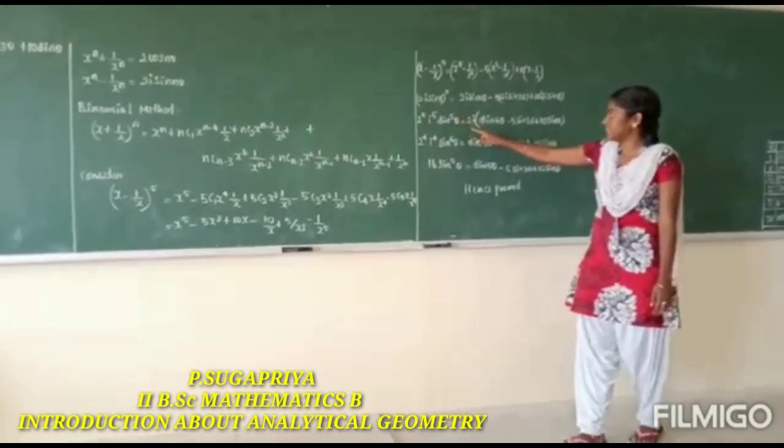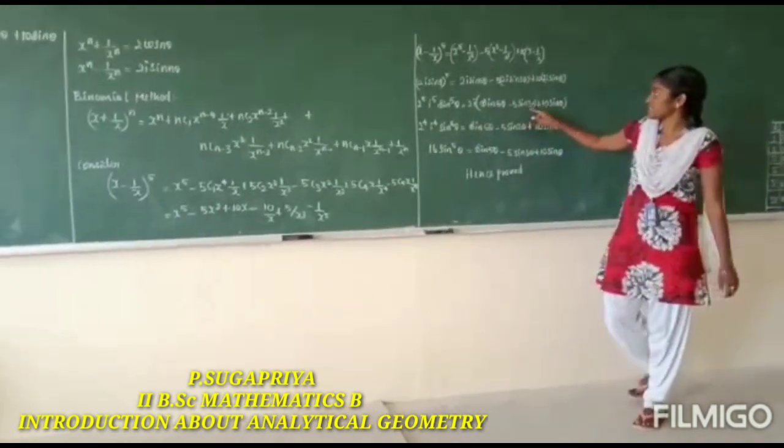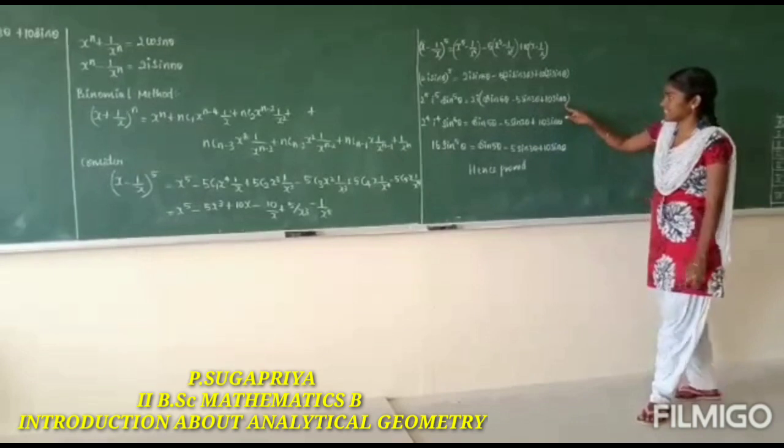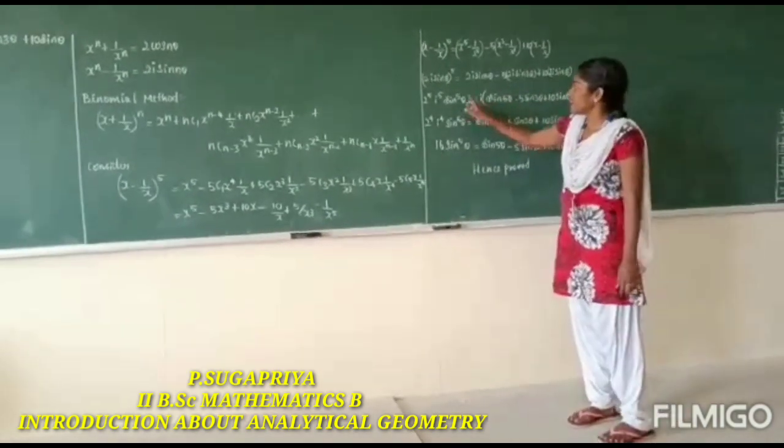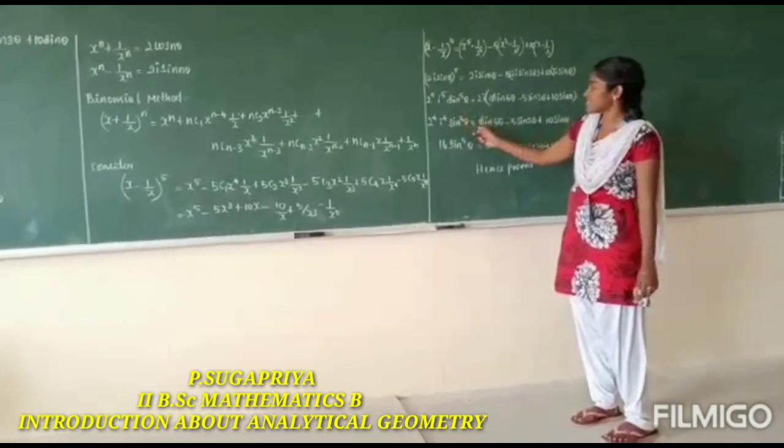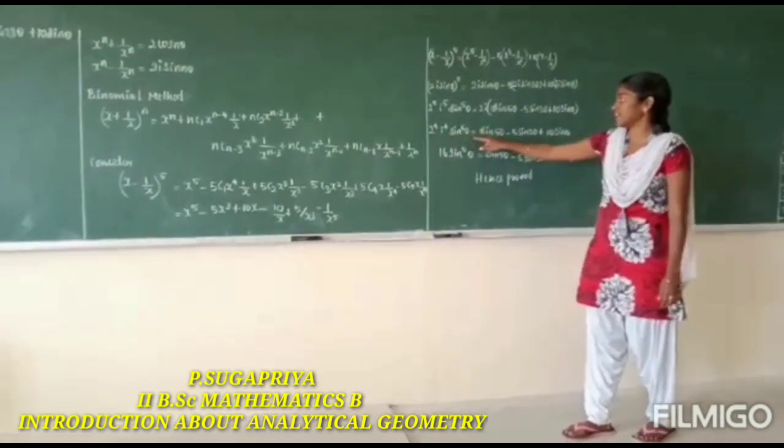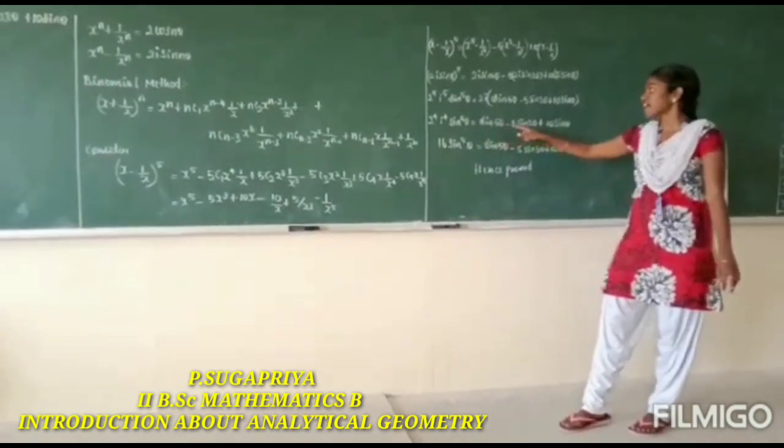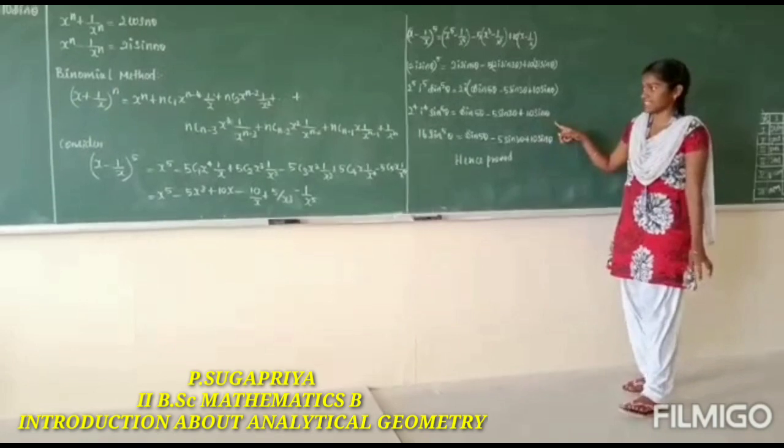i^5 sin^5 theta equals 2i sin 5 theta minus 5 times 2^3 i^3 sin 3 theta plus 10 times 2i sin theta. We take 2i commonly, then 2i cancels. We get 2^4 times i^4 sin^5 theta equals sin 5 theta minus 5 times 2^2 i^2 sin 3 theta plus 10 sin theta.